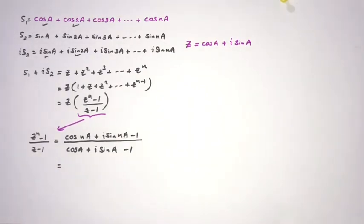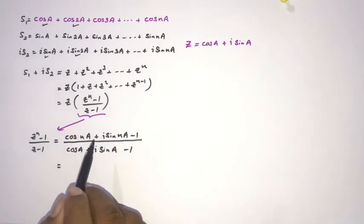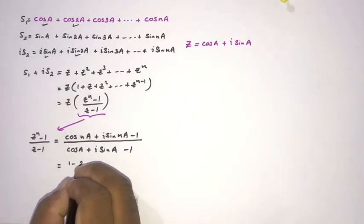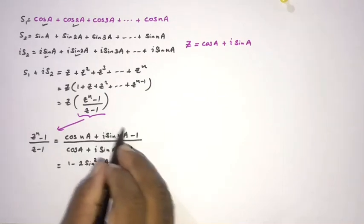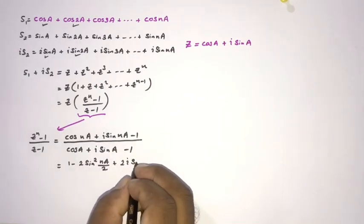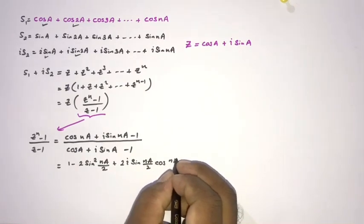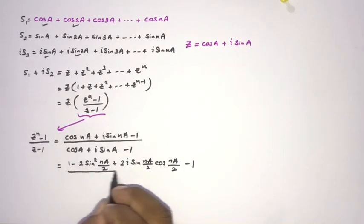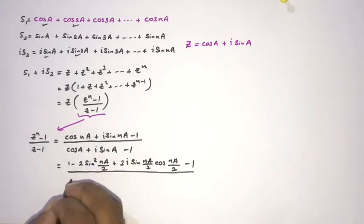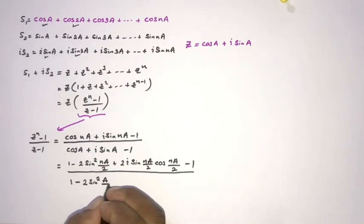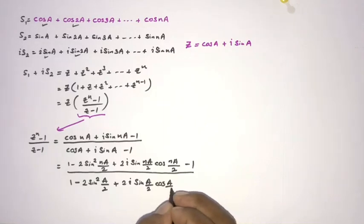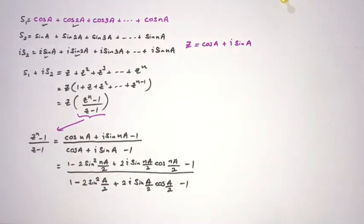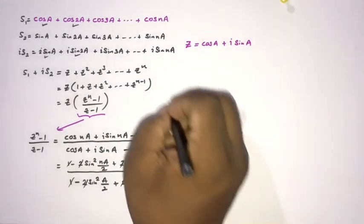We apply trigonometric identities: cos(na) = 1 - 2sin²(na/2), and sin(na) = 2·sin(na/2)·cos(na/2) using the double angle formula. In the denominator, cos(a) = 1 - 2sin²(a/2) and sin(a) = 2·sin(a/2)·cos(a/2). The 1 - 1 terms cancel and the factor of 2 also cancels.